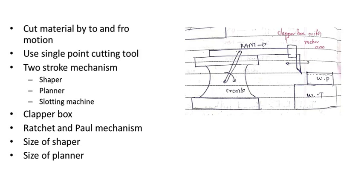The three types of reciprocating mechanisms are: first, the crank and slotted lever mechanism; second, the Whitworth quick return motion mechanism; and third, a hydraulic mechanism. Generally, a shaper uses the crank and slotted lever mechanism, a planer uses the Whitworth quick return motion mechanism. A slotting machine is nothing but a vertical shaper where the RAM holding the tool reciprocates in a vertical action; it can also be called a vertical shaper machine.